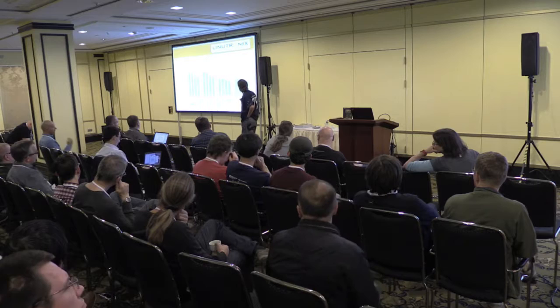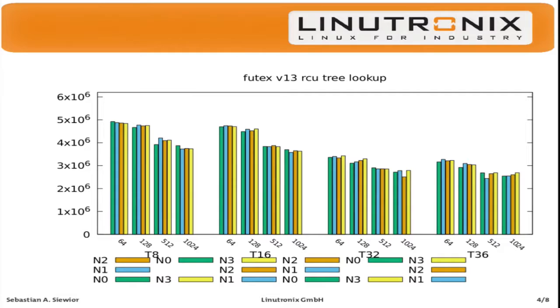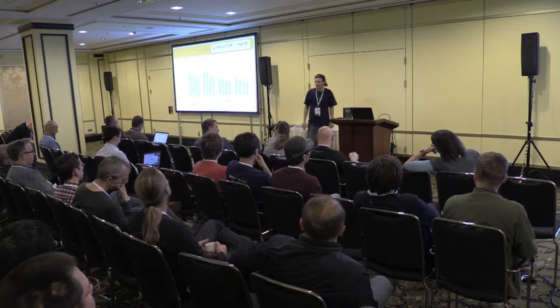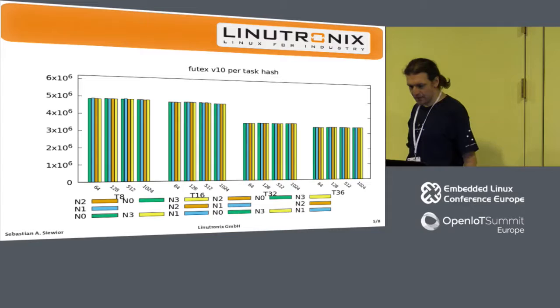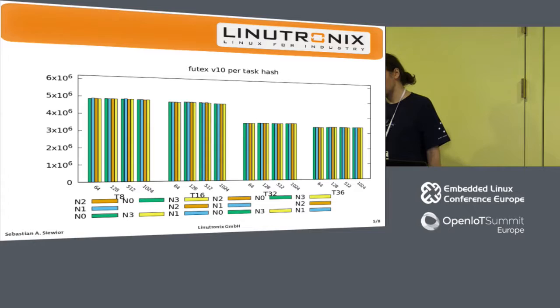We need an attach from user space to say this lock is now attached to the process, so we need a kind of hint for that. This is version 10, where we had a hash per task, which got knocked down because we could have hash collisions within a task — like two separate threads.